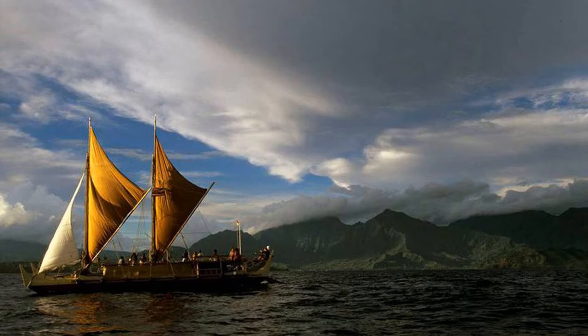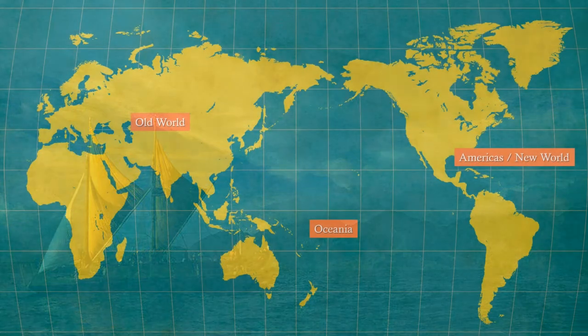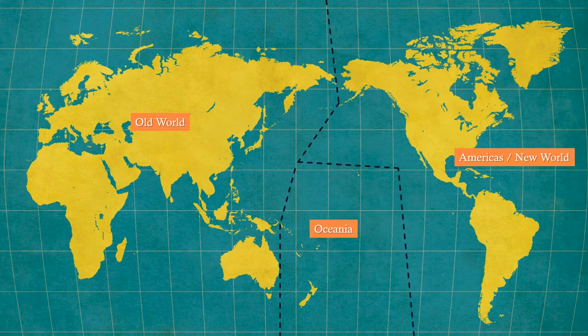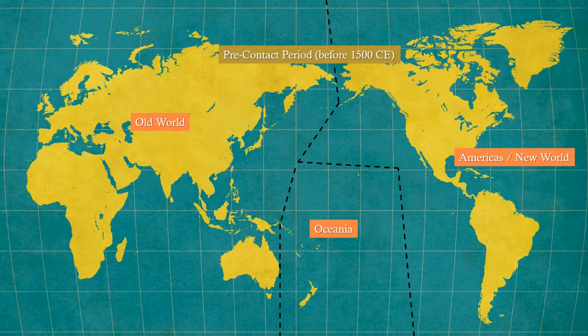For most of the history of these peoples, they were cut off from the rest of the world and from each other. The peoples of the Americas were in their own bubble, and the peoples of Oceania were in another. This vast expanse of time can be referred to as the pre-contact period, a period in which the old world and the new worlds were separated.